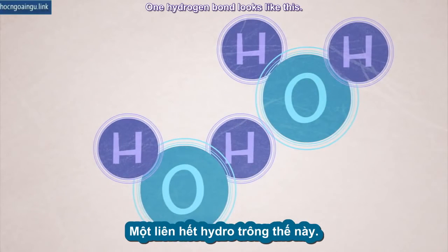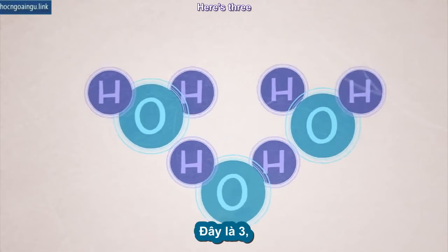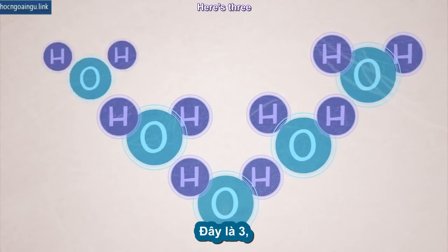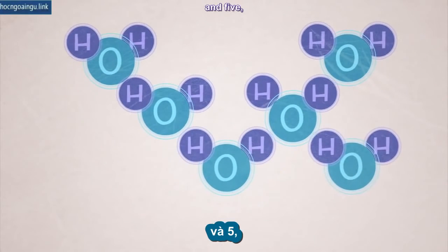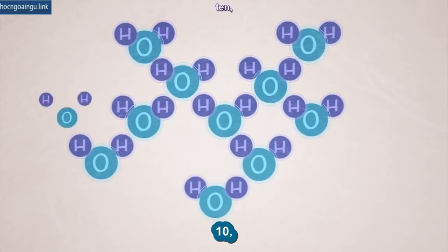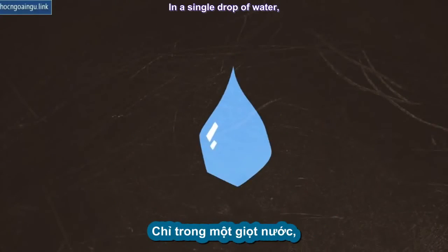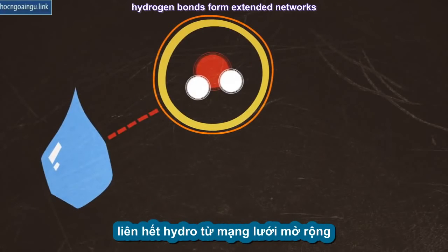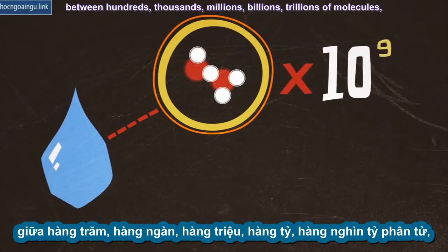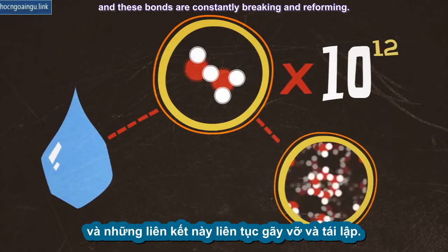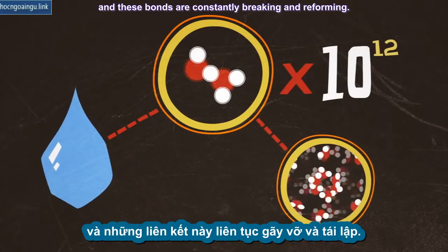One hydrogen bond looks like this. Two look like this. Here's three, and four, and five, six, seven, eight, nine, ten, eleven, twelve. I could go on. In a single drop of water, hydrogen bonds form extended networks between hundreds, thousands, millions, billions, trillions of molecules. And these bonds are constantly breaking and reforming.